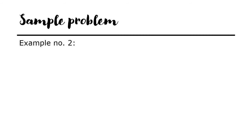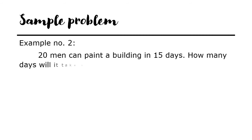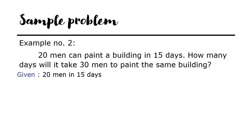Example number 2: 20 men can paint a building in 15 days. How many days will it take 30 men to paint the same building? Given: 20 men in 15 days. Here is the solution.